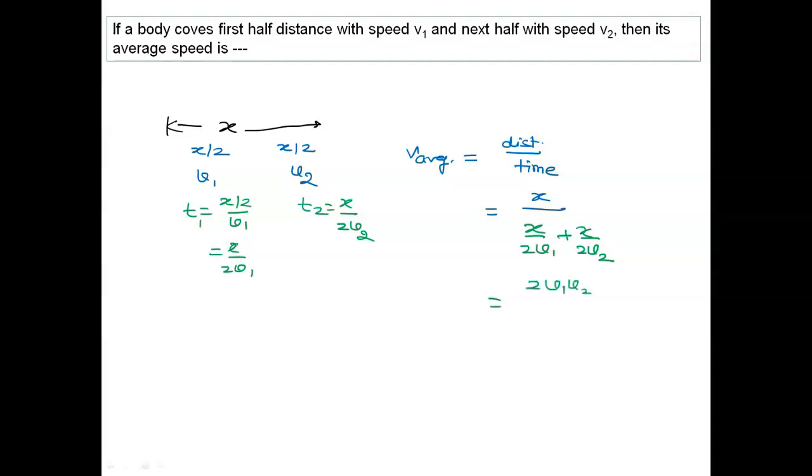You will get 2v1v2 upon v1 plus v2, and this is very, very important formula. Children, you are supposed to learn it. This is very important formula we will use as a shortcut at number of places.